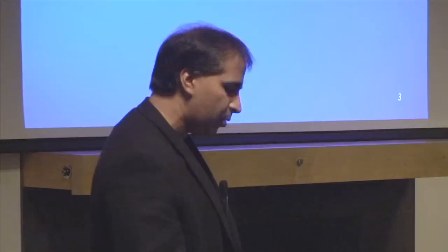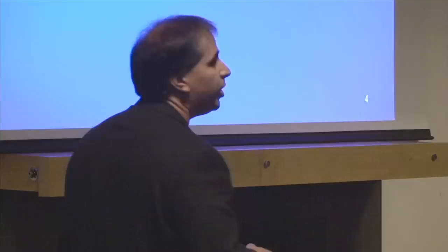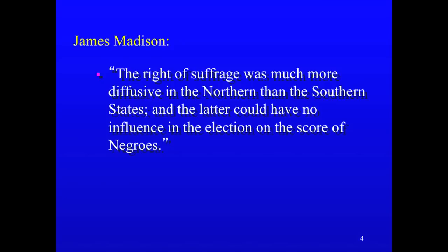So if the Electoral College wasn't about elitism and it wasn't about small states, what is it about? Well, like so many things at the founding, you can't understand the Electoral College without understanding slavery. Slavery ramifies through most aspects of the Constitution, including the Electoral College provision. The real problem with a general national election was summarized by James Madison: the North has more voters, the North will win these elections, and the South won't like that because the South is worried about slavery and whether the North wants to shut it down ultimately. We're 75 years away from the Civil War, but people see the writing on the wall.